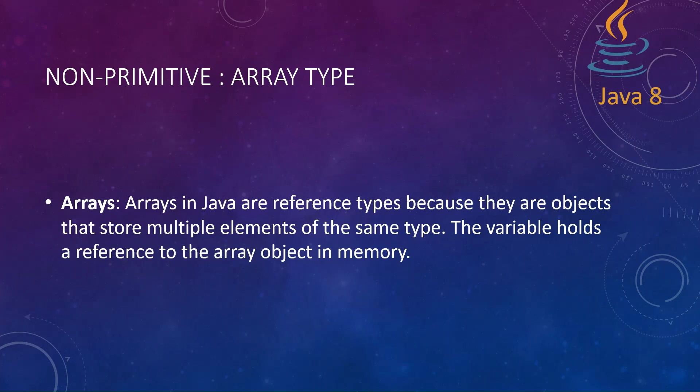An array can hold more than one data element of the same type. If I say an int array, it means I can hold similar integer items in the same variable. This is called a reference type because it doesn't directly hold the value itself — it holds the reference of all the variables, which is why it's called a reference type.